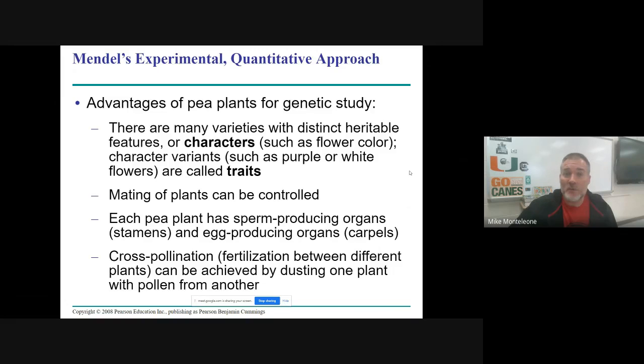Most geneticists these days use fruit flies. They reproduce like crazy. Lots of different traits to look at. We're talking like days, on the order of days, not weeks, before they're sexually mature, so you can get a lot of data very quickly. Mendel picked a good organism in the pea plant, Pisum sativum, the scientific name.